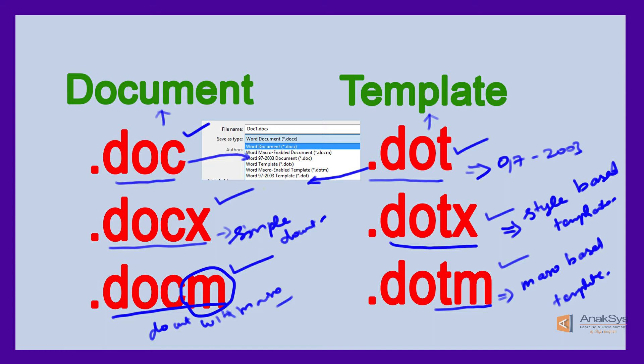There are three formats in MS Word document files. The first is .doc and .docx — both are essentially the same. The older version before MS Word 2007 used the .doc format. After 2007, the format was updated to XML-based, so .docx was introduced. From 2007 through 2019, we use the .docx file format.